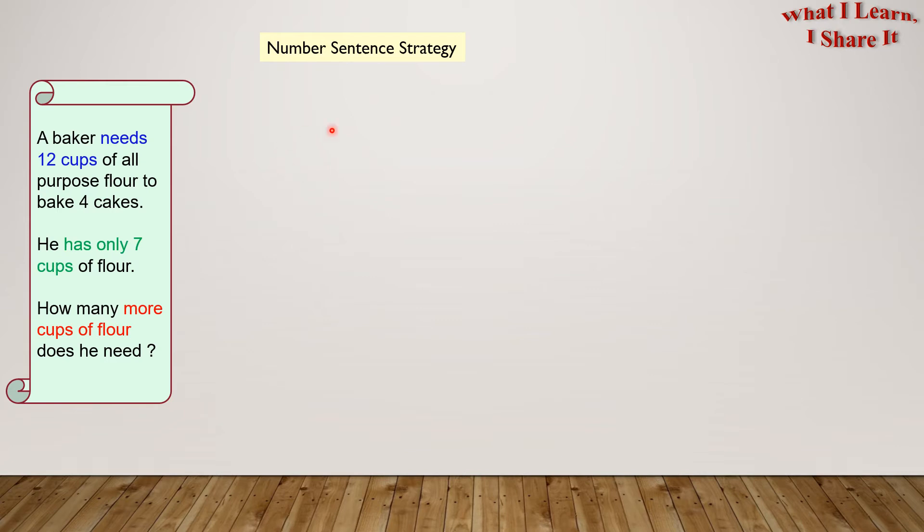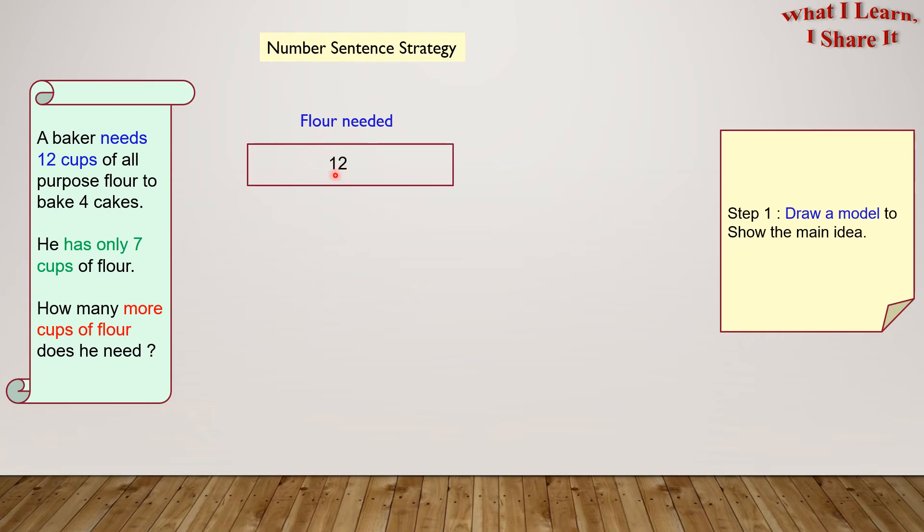Number sentence strategy. Step 1. Draw a model to show the main idea. So, flour needed is 12 cups. We represent it with this rectangle here. And there is 7 cups of flour that the baker already has. And we have to find out how many more cups the baker needs.